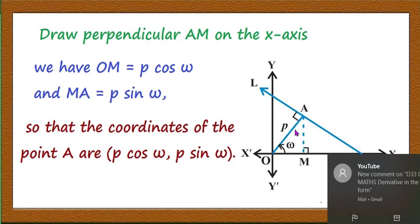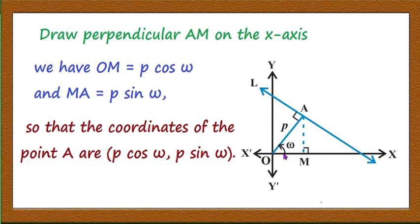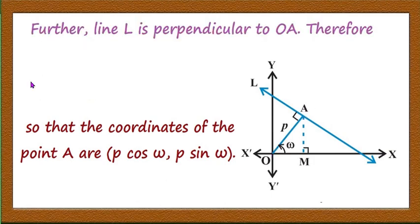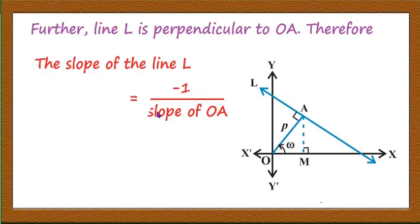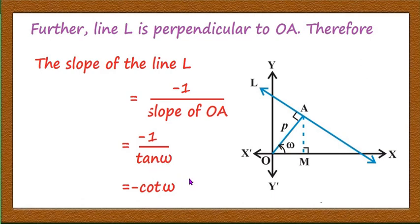Next we have to find the slope of the line. The slope of OA is tan omega, since the angle OA makes with the x-axis is omega. The line l is perpendicular to OA, so the slope of l is -1/(slope of OA) = -1/tan omega = -cot omega. We now have both the slope of the line and a point on it.